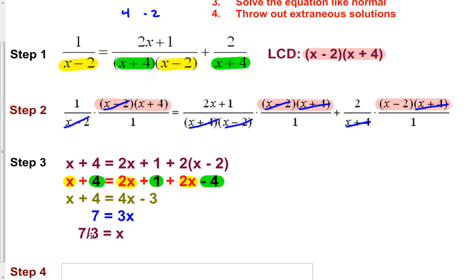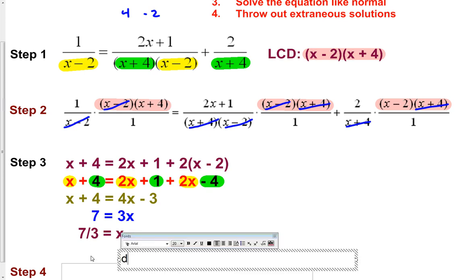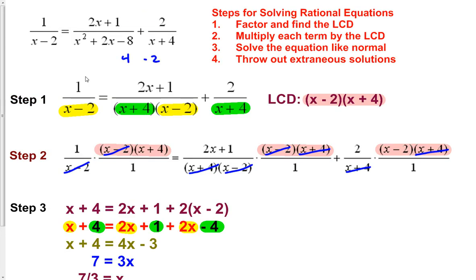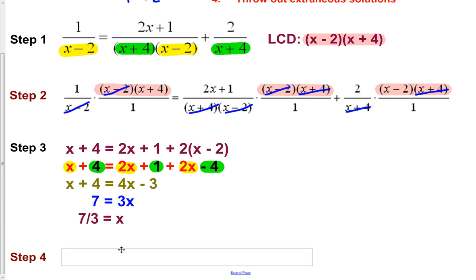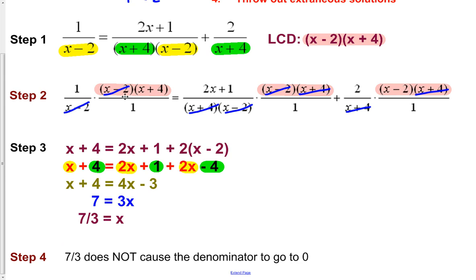Our last step is to check this in our original equation to make sure it doesn't cause the denominator to go to zero. Plugging in 7 thirds: 7 thirds minus 2 is not going to be 0, and 7 thirds plus 4 is not going to be 0. The only values that could make the denominators zero are negative 4 or positive 2, so 7 thirds is safe. Therefore, x equals 7 thirds is our final solution.